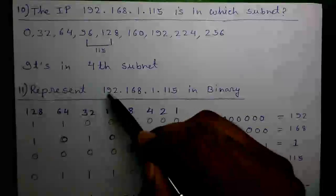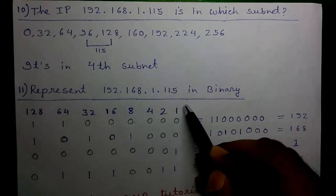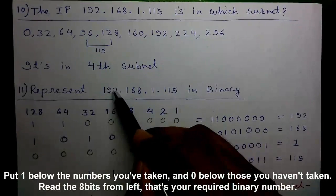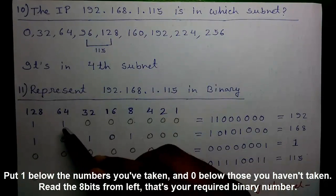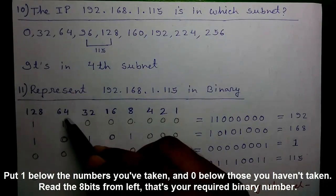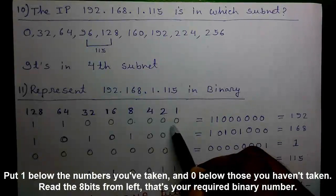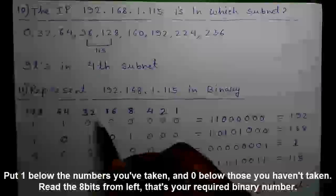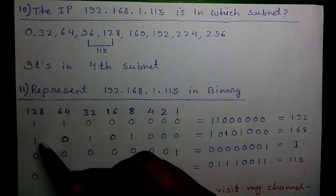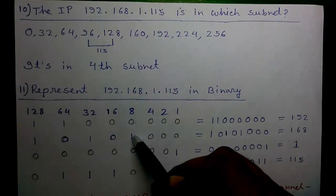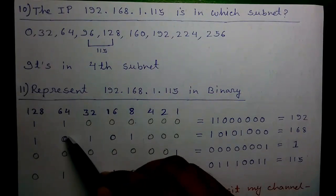Eleventh calculation: represent 192.168.1.115 in binary. We'll use the weighted binary chart. To get 192 we need 128 plus 64, so we place 1 below those two positions and 0 below the rest. The binary equivalent of 192 is 11000000. For 168 we need 128 plus 32 plus 8, so we place 1 below those three numbers and 0 below the others.